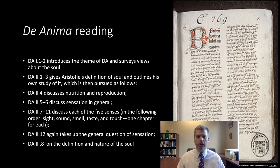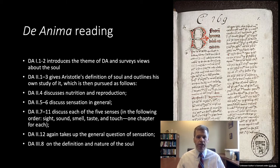In chapter 4 of De Anima book 2, he discusses nutrition and reproduction. In chapters 5 and 6, he discusses sensation or perception in general. In chapters 7 through 11, Aristotle discusses each of the five senses: sight, sound, smell, taste, and touch. As an aside, if you look briefly at book 3, chapter 1, you can see that Aristotle makes the claim that there are just five senses. Then at the end of book 2, chapter 12, Aristotle summarizes his view and gives a general account of perception. In book 3, chapter 8 — which we'll look at next time when discussing the mind and the mind's role in action — Aristotle gives a general definition and nature of the soul.